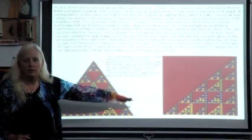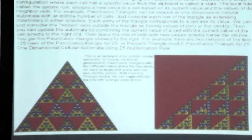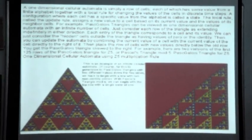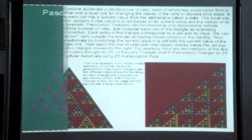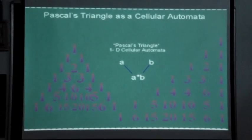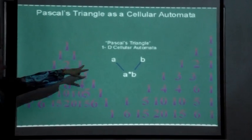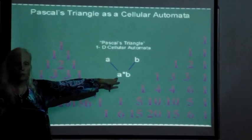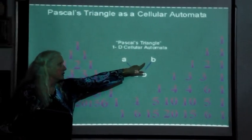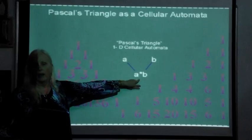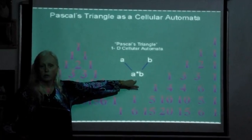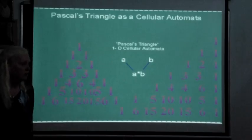Here's another way to see it. You have your row, and the update rule is: add the two neighbors, mod n (or perform the group multiplication of the two), to get the next row.